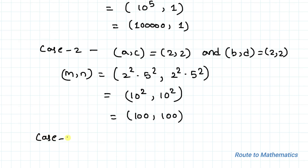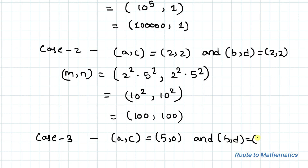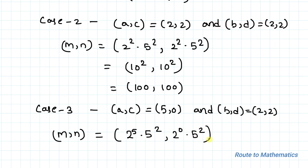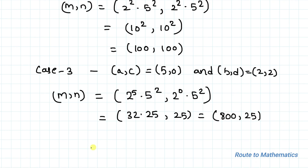Case 3: Take (a, c) = (5, 0) and (b, d) = (2, 2). Then m = 2⁵ · 5² = 32 · 25 = 800, and n = 2⁰ · 5² = 25. So (m, n) = (800, 25) is another solution.